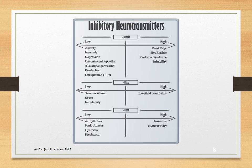Taurine is an inhibitory neuromodulator. And when it's very low, you can get arrhythmias, panic attacks, cynicism, and sometimes pessimism. When it's high, you can have insomnia and hyperactivity. Of interest, if you look at the ingredients in energy drinks, you'll find that taurine is the first ingredient. The reason it is present is not because they're trying to heal your brain, but because in high doses, taurine will act as an antiarrhythmic, protecting your heart. So on one hand, they're giving you substances that will upregulate your system and may cause heart problems, and on the other hand, they're attempting to protect your heart by giving you a high level of taurine. But then again, a high level of taurine may give you insomnia and hyperactivity — an interesting way of dealing with things to be sure.